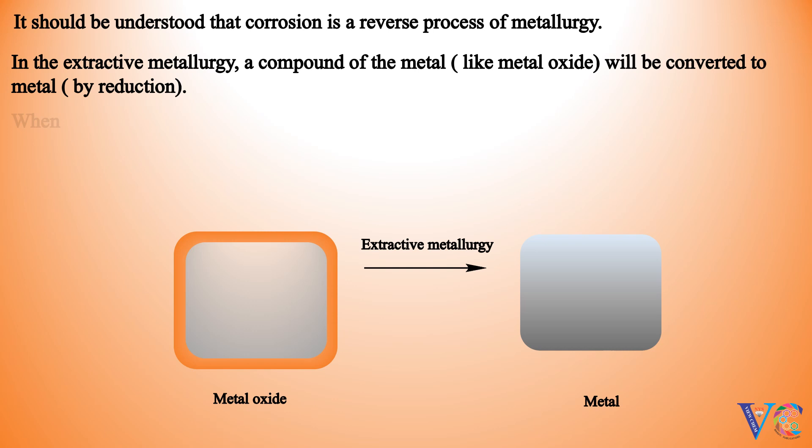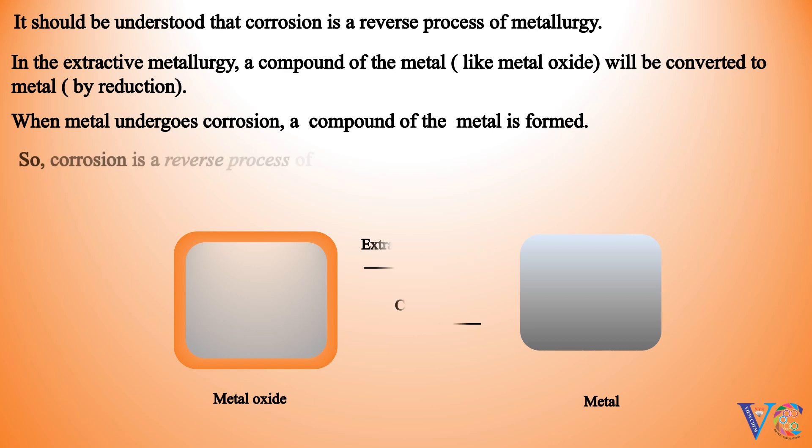When metal undergoes corrosion, a compound of the metal is formed. Metal undergoes corrosion to form a compound of the metal. So, corrosion is a reverse process of metallurgy.